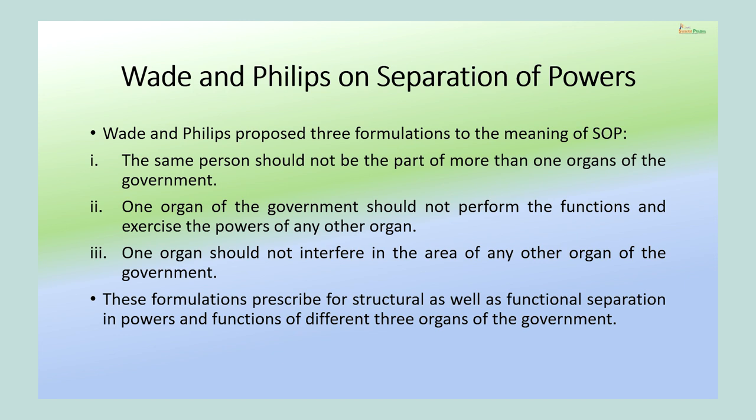All the powers should be separated and one person should belong only to one organ of the government. The legislator should not be the executive; the executive should not become part of the judiciary; and the members of the judiciary should not be part of the executive or the legislature. The second proposition by Wade and Phillips is that one organ of the government should not perform the functions or exercise the powers of the other organs of the state. This refers to the functional classification or functional aspect of the doctrine of separation of powers.